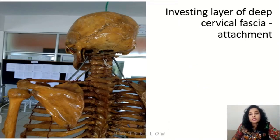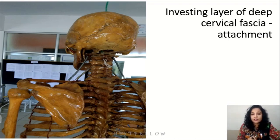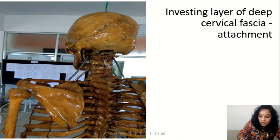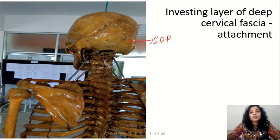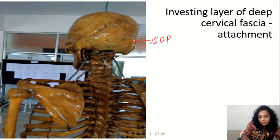Let us talk about the investing layer of deep cervical fascia attachment. It is attached above to the external occipital protuberance. Here you are seeing the posterior view of the skull and cervical vertebra. Here the projection is the external occipital protuberance, and superiorly it attaches to the external occipital protuberance and the superior nuchal line of the occipital bone.